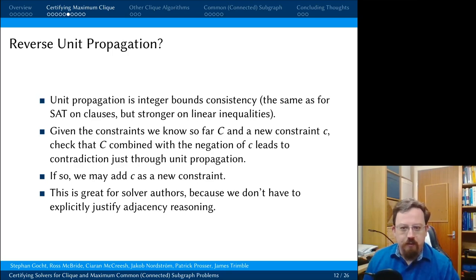So what about reverse unit propagation? So we have a set of constraints, big C, that we know so far. These could be from the model or constraints we've already learned. And we have a new constraint, little c, that we want to introduce. What we do is we check that all the constraints we have so far, combined with a negation of little c, or new constraint, leads to contradiction. Not doing any search, just using unit propagation. And if this is the case, then it is obvious that we can add little c as a new constraint. If adding not little c immediately leads to a contradiction, then we can add c instead.